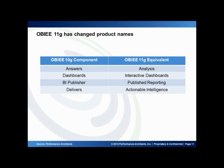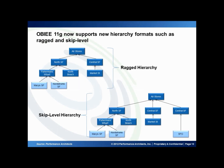OBIE 11G supports new hierarchy formats, which really manifests in the visual look and feel of the tool. Different types of hierarchies are now much more integrated — things like ragged hierarchies and skip-level hierarchies, which are common in many client data sets. Ragged hierarchies are where different nodes in the hierarchy may expand to different levels of detail. For example, the North SF region drills all the way down to a store level like Macy's and Nordstrom's, while the Central SF region only drills down to the market street level — that's a ragged hierarchy.